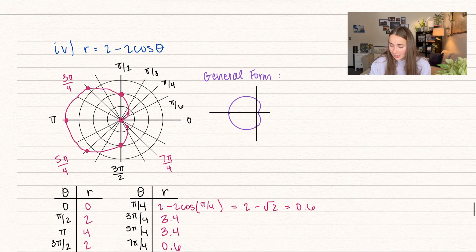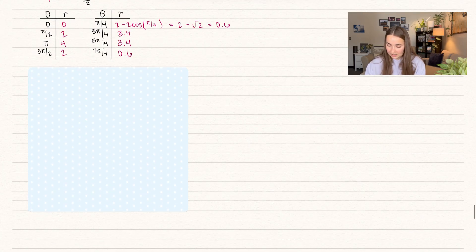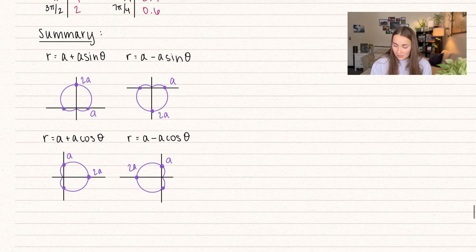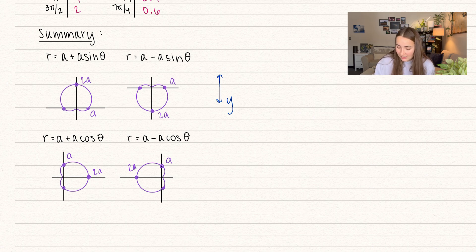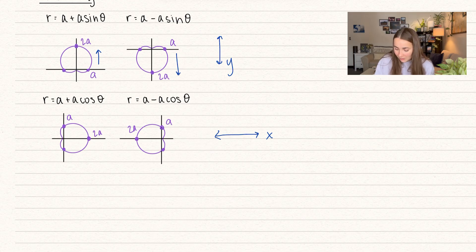The general form r equals a minus a cosine of theta still opens in the x direction, but now in the negative x direction because of the minus. To summarize: with sine theta, we open in the y direction — a plus opens upward a distance of 2A, a minus opens downward a distance of 2A. With cosine theta, we open in the x direction — a plus opens in the positive x direction a distance of 2A, and a minus opens in the negative x direction a distance of 2A.